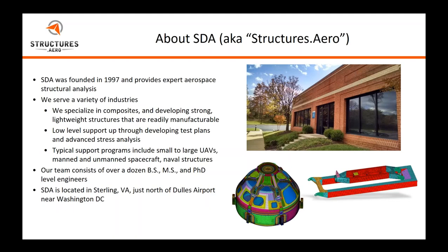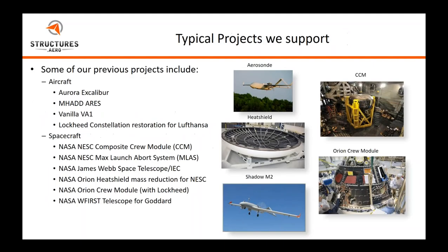SDA is a structural analysis aerospace company based about five miles north of Dulles Airport. We specialize in the design and analysis of aircraft and spacecraft structures, with particular expertise in composites. We have engineers ranging from bachelor's degrees to PhDs. Our projects span from spacecraft like the composite crew module and the Orion crew module, to aircraft like the Aerosonde and Shadow.